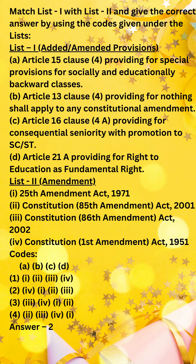stating that nothing in this article or in Clause 2 of Article 29 shall prevent the state from making any special provision for the advancement of any socially and educationally backward classes of citizens or for the Scheduled Castes and the Scheduled Tribes.